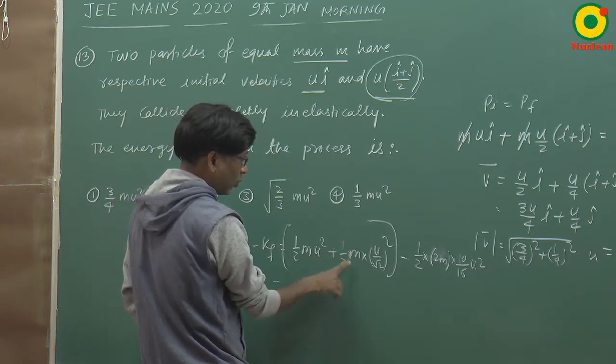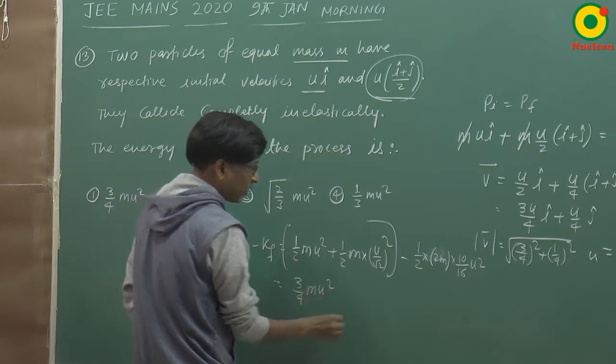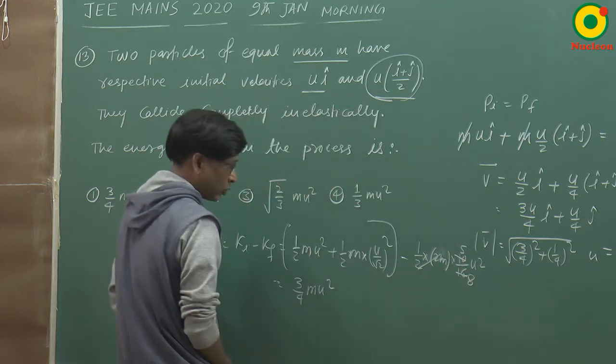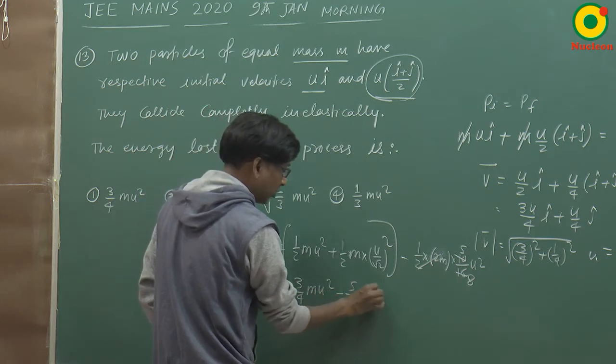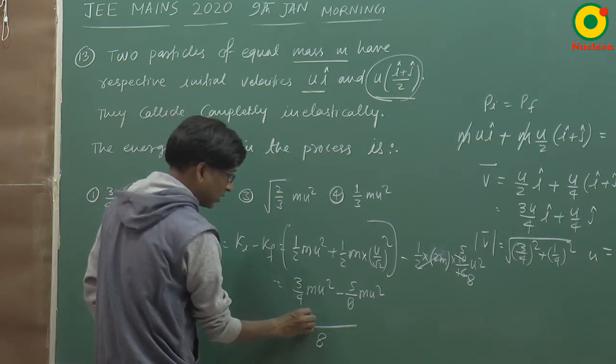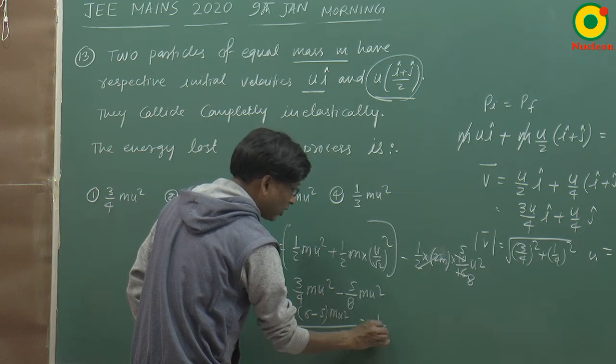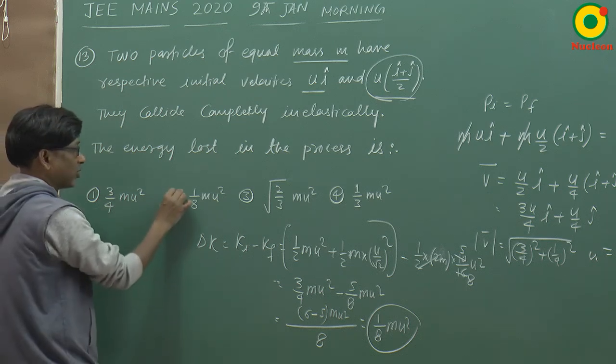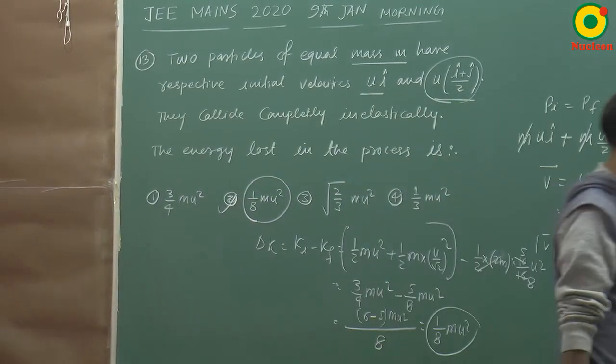This becomes 1/4 and 1/2, which is (3/4)mu². From this we subtract - this cancels - this becomes 5/8. So minus (5/8)mu². Taking LCM as 8, this becomes (6-5)/8 mu², which equals (1/8)mu². So the loss is given in the second option correctly as (1/8)mu².